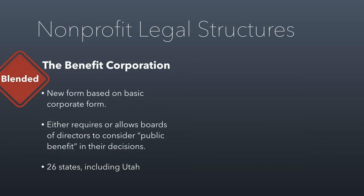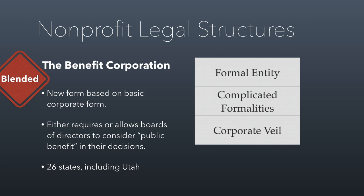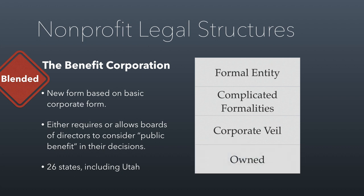The benefit corporation is a relatively new kind of corporation, blended between nonprofit and for-profit. It allows or requires board members to consider public benefit in their decisions, giving boards the freedom to act in the public interest, not just for shareholder benefit. You can set one up in about 26 states, including Utah. They're formal entities with complicated formalities that benefit from the corporate veil. There is no nonprofit benefit corporation — they always have owners, so they can never get tax-exempt status.